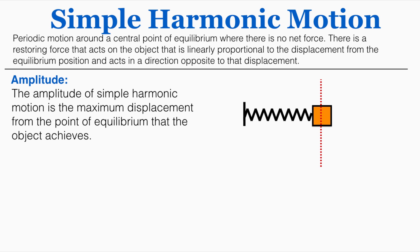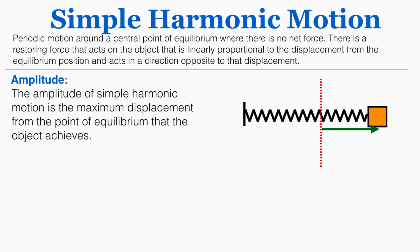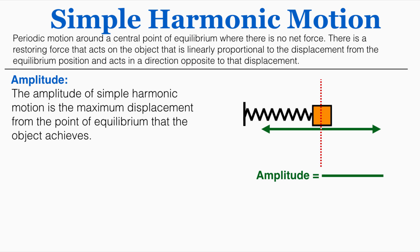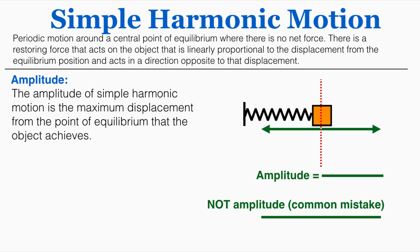One important vocabulary word for simple harmonic motion is amplitude. The amplitude is the maximum displacement from the point of equilibrium that the object achieves. As the spring oscillates back and forth, the green line shows the maximum displacement from the equilibrium position — and it displaces that same amount in the opposite direction. The amplitude is the length from the equilibrium point to one far edge. A common mistake is to assume the entire forward-and-back path length is the amplitude, but that's actually twice the amplitude, since amplitude is only from equilibrium to one end.